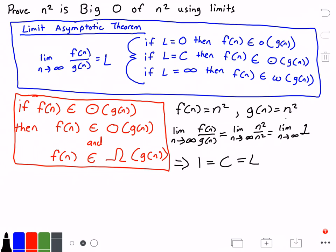Now we go back to our theorem and look at the case where L equals C. That's our second case here—I'm highlighting it in red. We see that if L equals C, then our function F(N) belongs to big theta of G(N).